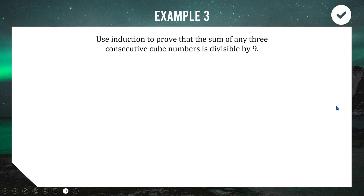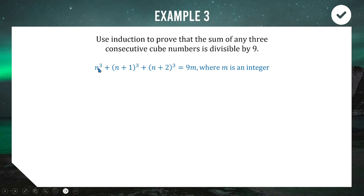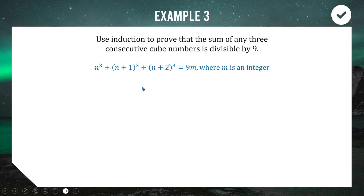On to example three — another divisibility proof. We're using induction to prove that the sum of any three consecutive cube numbers is divisible by nine. That looks like n³ + (n+1)³ + (n+2)³, and we want to show this equals nine times some integer. For the initial case, n equals one: 1³ + 2³ + 3³ = 1 + 8 + 27.